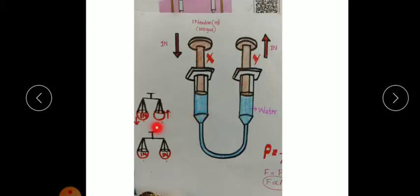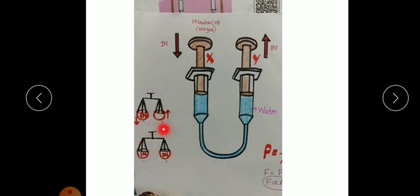Here you can see the pistons compared with a balance. There are two pans — if you keep 1 Newton of weight on one pan, it moves downwards and the other pan moves upwards. If you keep 1 Newton on both pans, the balance becomes balanced. In the same way, on keeping 1 Newton on both pistons they are balanced. In the next step, replace syringe X with a syringe having a smaller diameter.